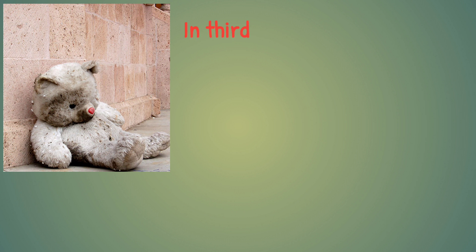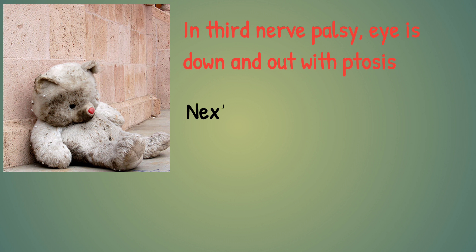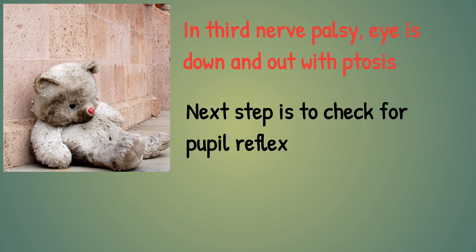In third nerve palsy, the eye is down and out with ptosis — just like a bear is down and out. So the eye will be down and out. The next step is to check for the pupillary reflex.